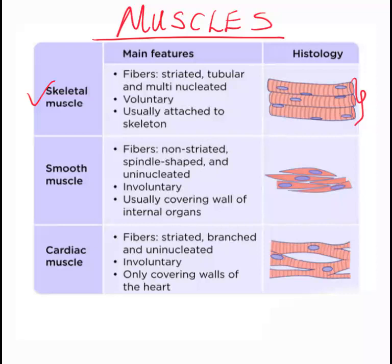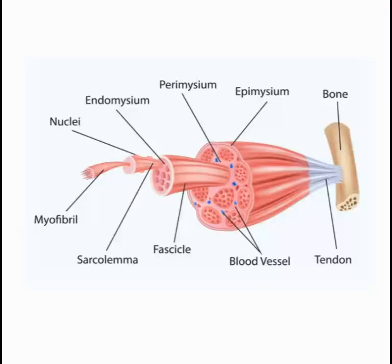There you find the smooth muscles. This is their structure. Then there are cardiac muscles — they are also fibres, they are striated, they are branched, and they are uninucleated. They are involuntary and only cover the walls of the heart.